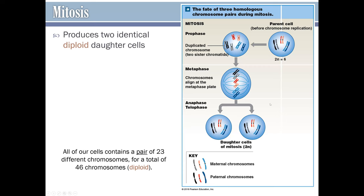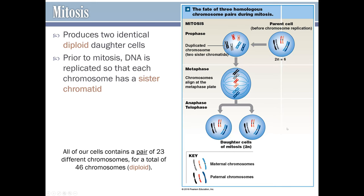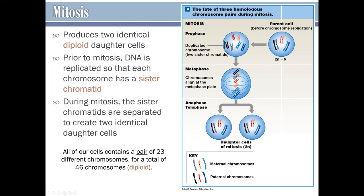In this example, the parent cell starts out with six chromosomes — two of each kind, shown by different colors: two blue, two gray, and two red. At the end of mitosis, the two daughter cells will be identical and will also have six total chromosomes, which are three pairs. Prior to mitosis, DNA is replicated so that each chromosome has a sister chromatid, giving chromosomes that X appearance. These are duplicated chromosomes, and during mitosis the sister chromatids get separated to create two identical daughter cells.